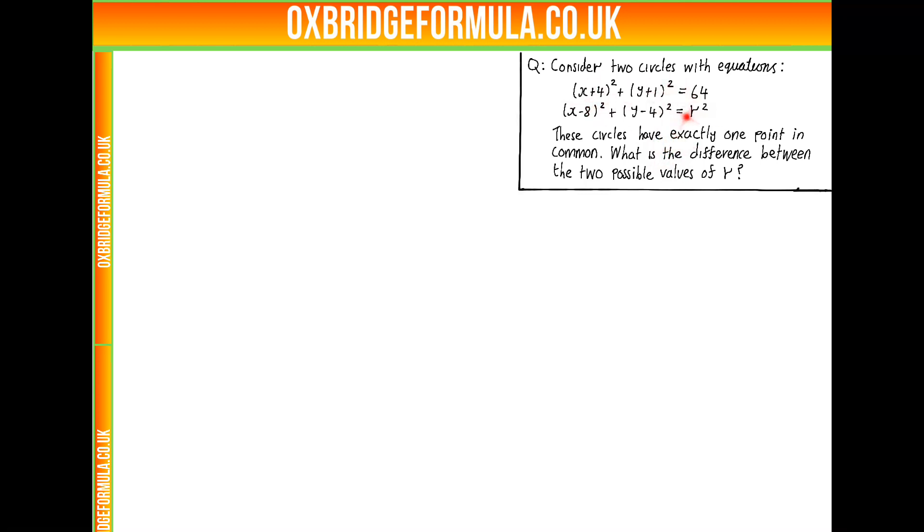What do these two circles look like? Well, circle 1, we'll call this top equation, and we know from the general formula for a circle that this has centre minus 4, minus 1, and 8 squared is 64, so we have radius 8.